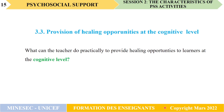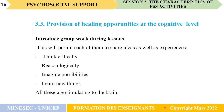The third aspect is the provision of healing opportunities at the cognitive level. What can a teacher do to provide healing opportunities at the cognitive level? The answer is that he or she will proceed through group work. When children work in groups, they are bound to exchange ideas and communicate. In this process, they will have to think critically, reason logically, imagine possibilities, and learn new things. All these mental activities are capable of stimulating the brain, and this has a positive healing effect at the cognitive level.